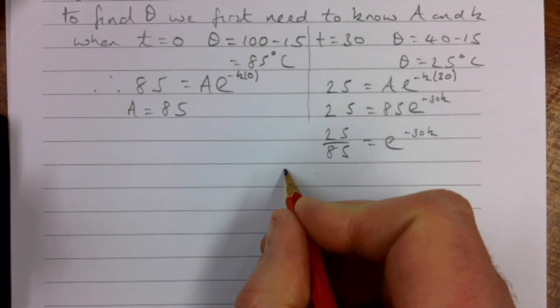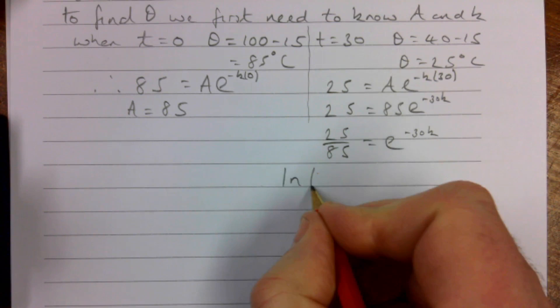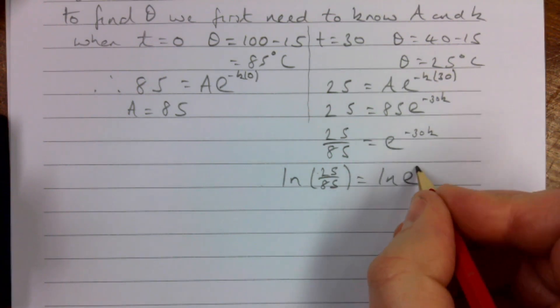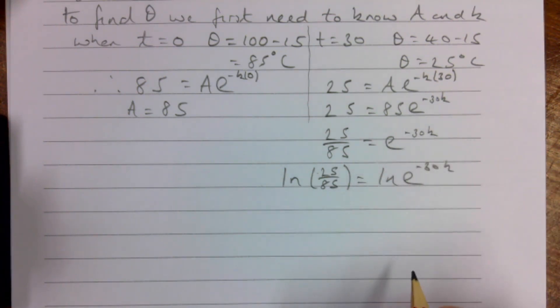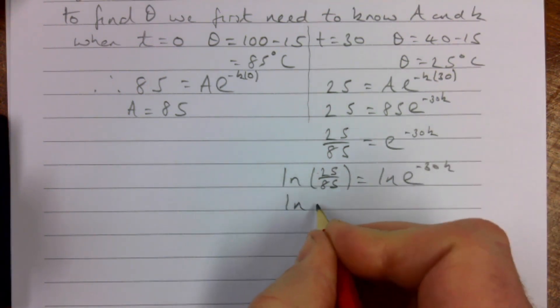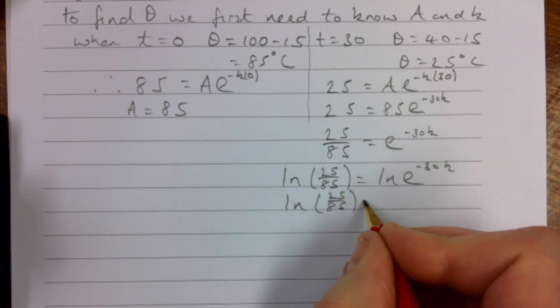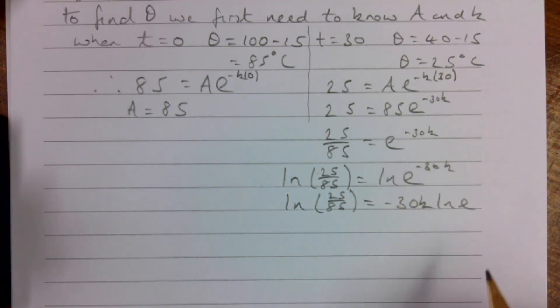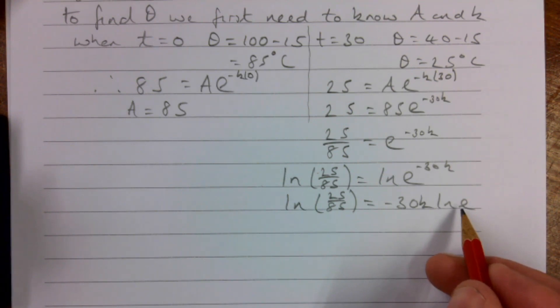I'm going to take logs of both sides as we did last time, and remember it's natural logs. So it's LN(25/85) = LN(e^(-30k)).